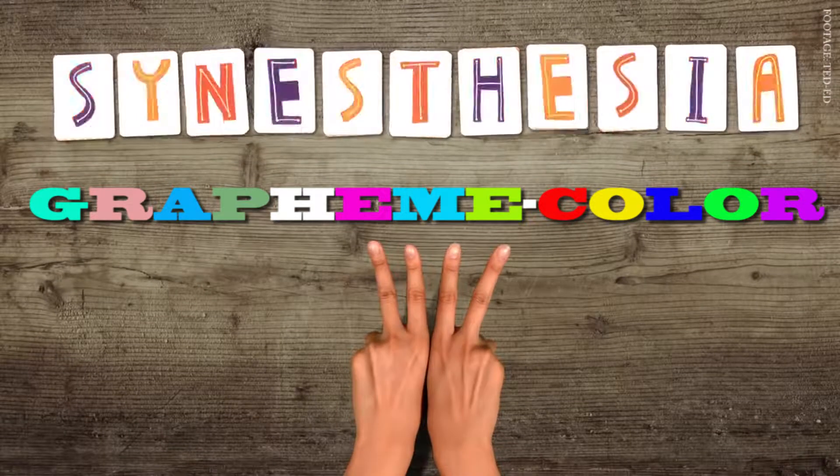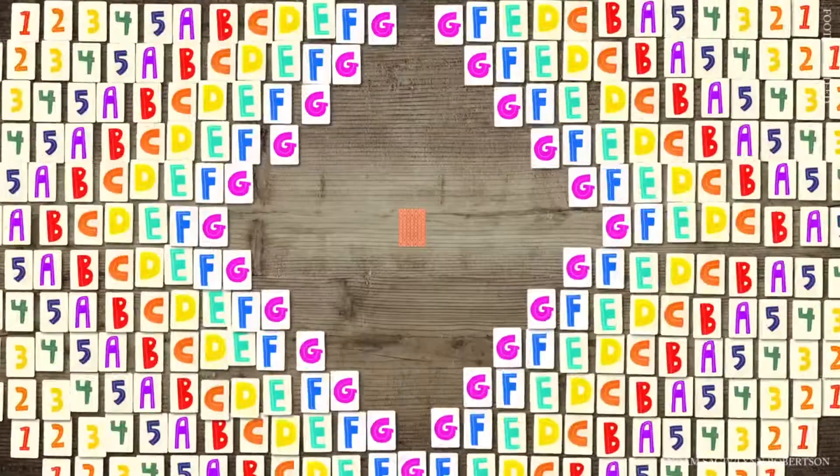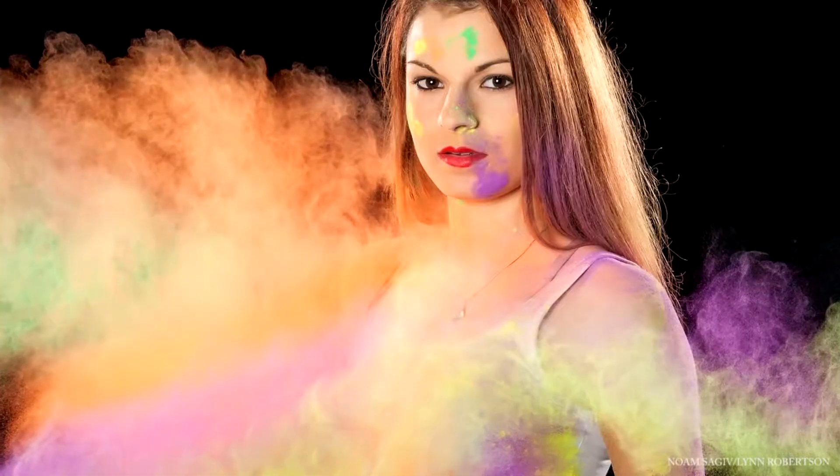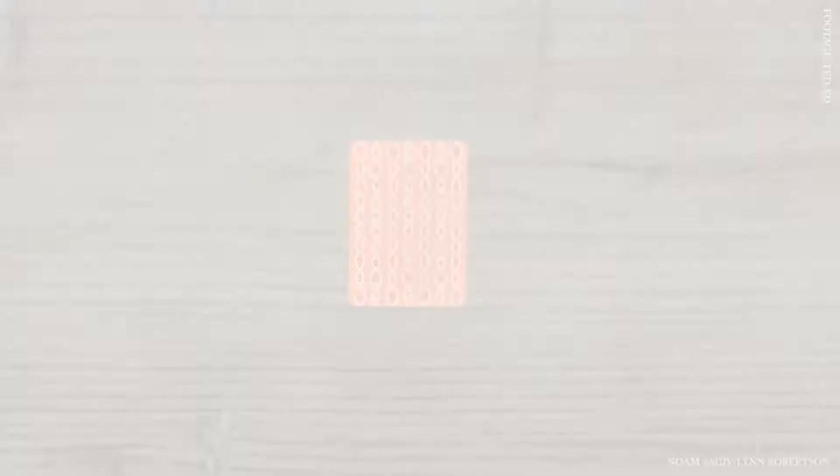People who experience this form of synesthesia commonly will see letters of the alphabet and numbers as tinged with color. For example, an individual may link the number one with the color red.